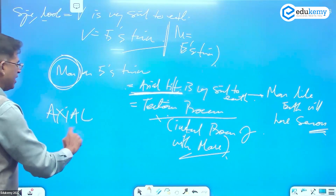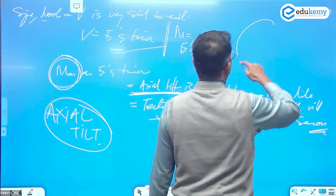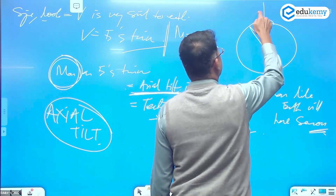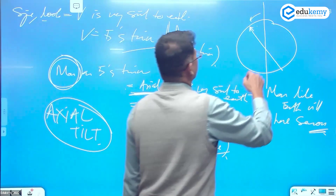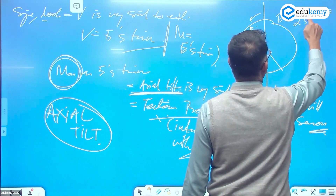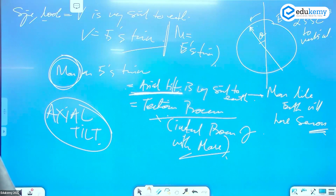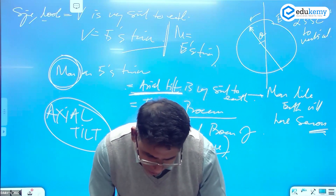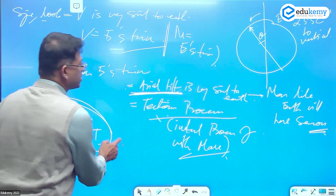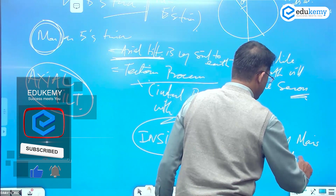All planets have a tilt, but Mars's tilt is very close to Earth's — around 23.5 degrees for Earth and 21 to 23 degrees for Mars. Because of its tectonic activity, NASA has launched a mission called the InSight mission to study Mars's tectonic processes.